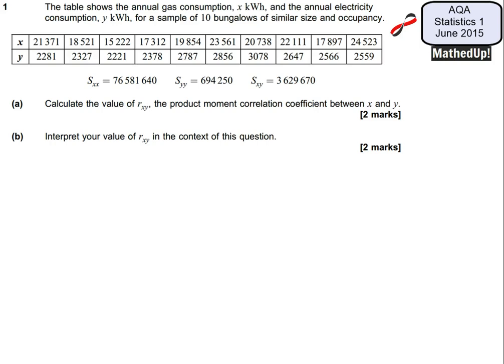Hi, this is question 1 from the AQA Statistics 1 June 2015 exam paper. We've been given a table that shows the annual gas consumption and the annual electricity consumption for a sample of 10 bungalows of similar size and occupancy.